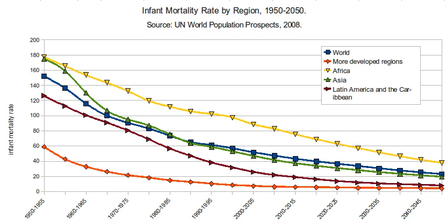The infant mortality rate correlates very strongly with, and is among the best predictors of, state failure. IMR is therefore also a useful indicator of a country's level of health or development, and is a component of the Physical Quality of Life Index. However, the method of calculating IMR often varies widely between countries, based on how they define a live birth and how many premature infants are born. Reporting of infant mortality rates can be inconsistent and may be understated, depending on a nation's live birth criterion, vital registration system, and reporting practices.